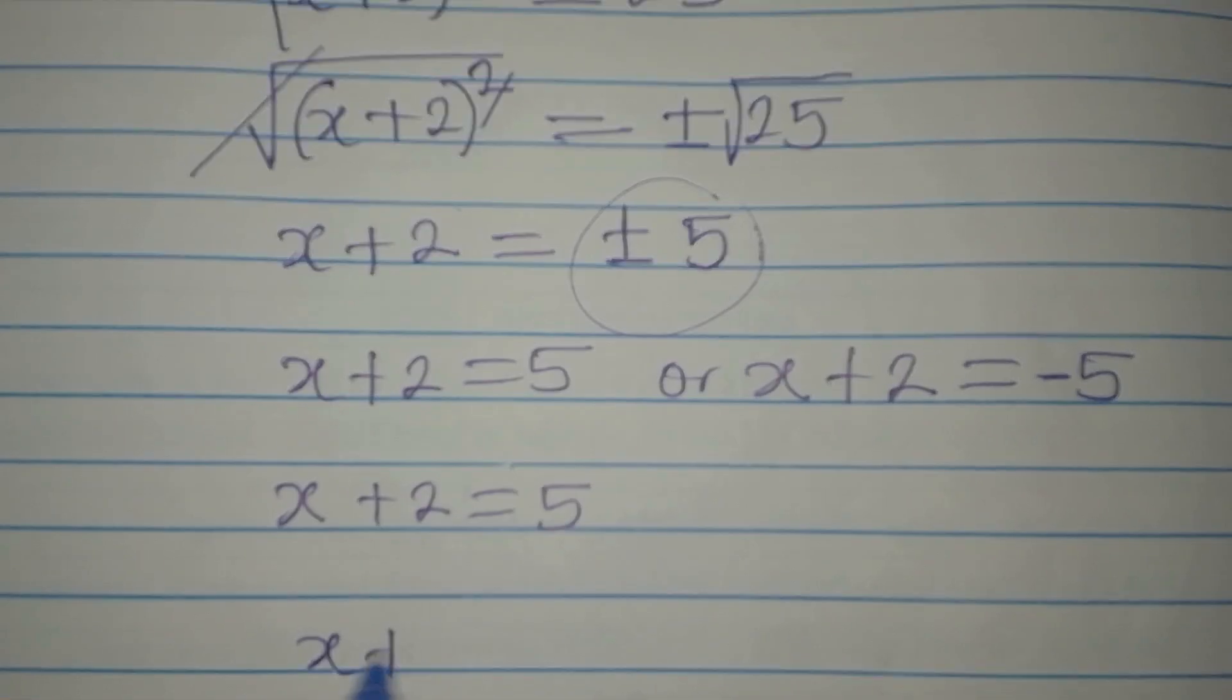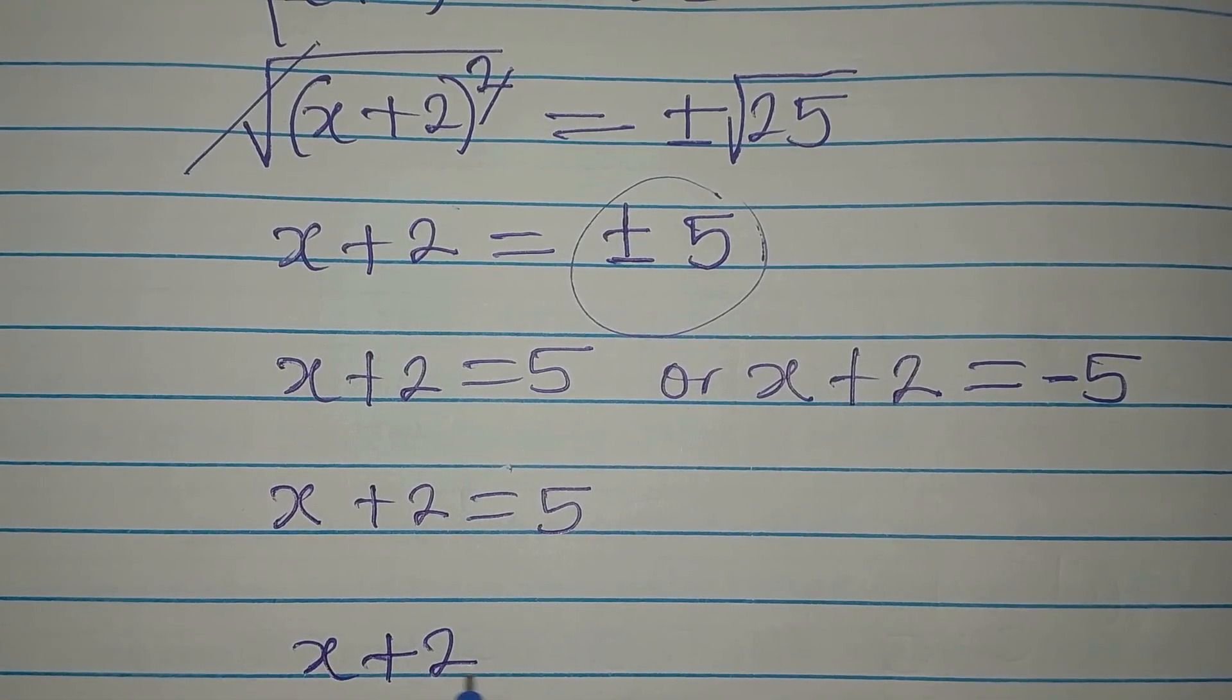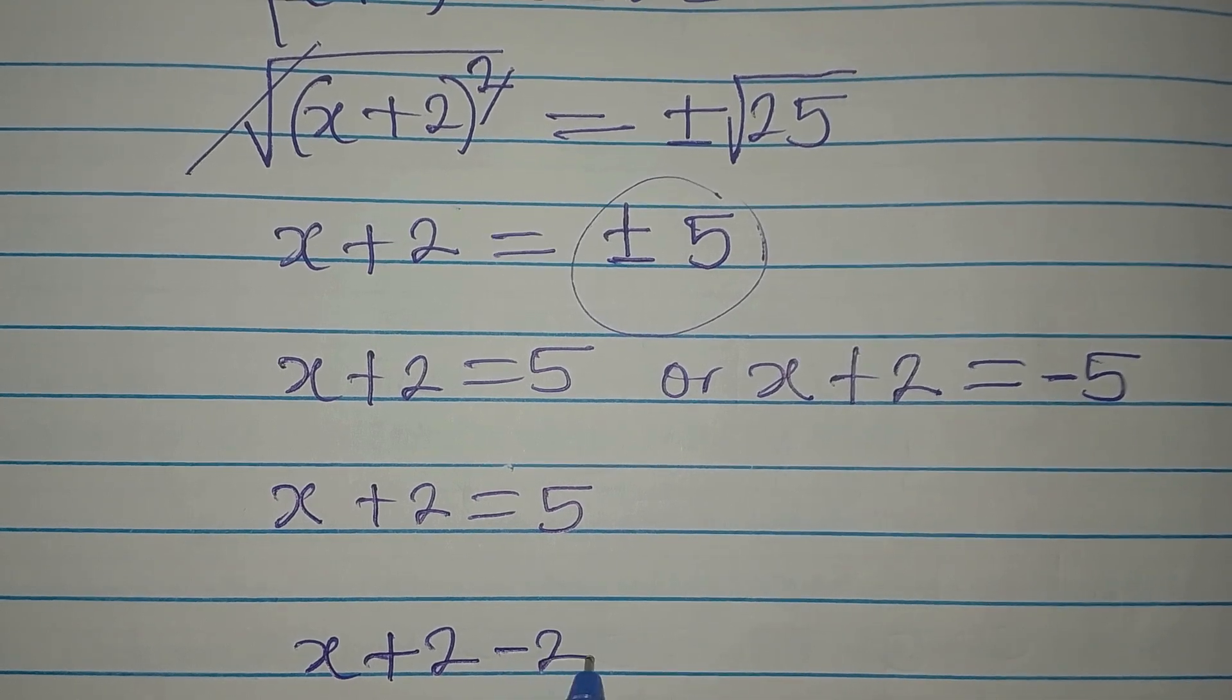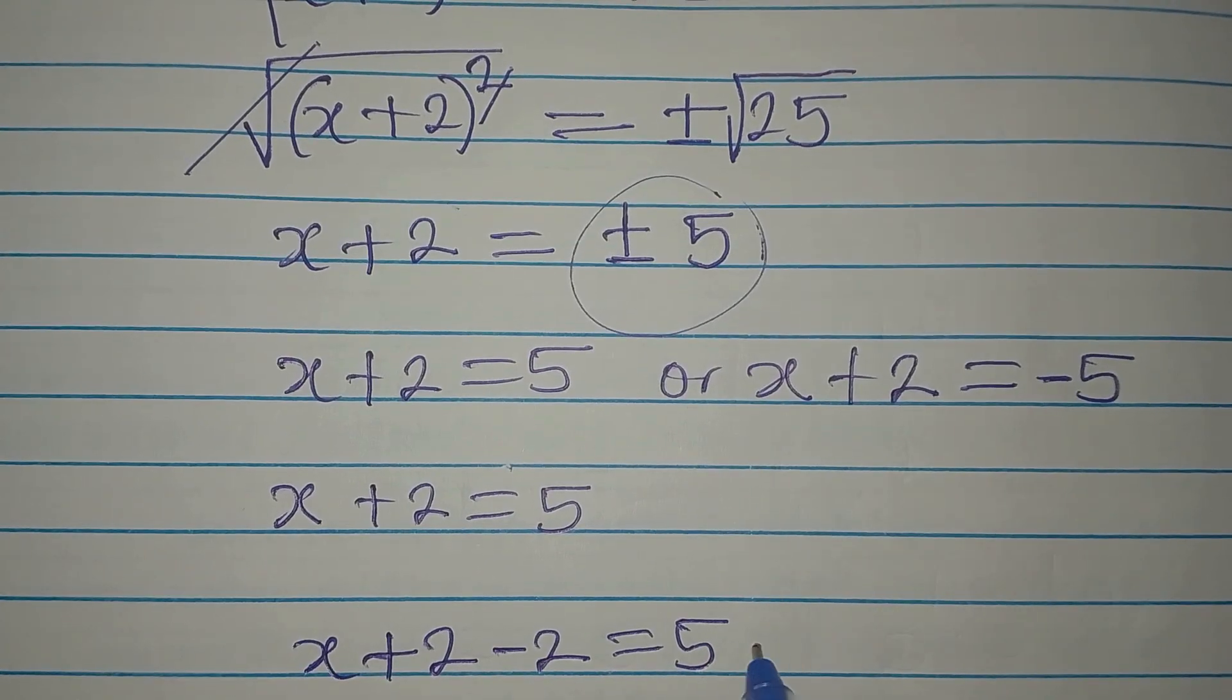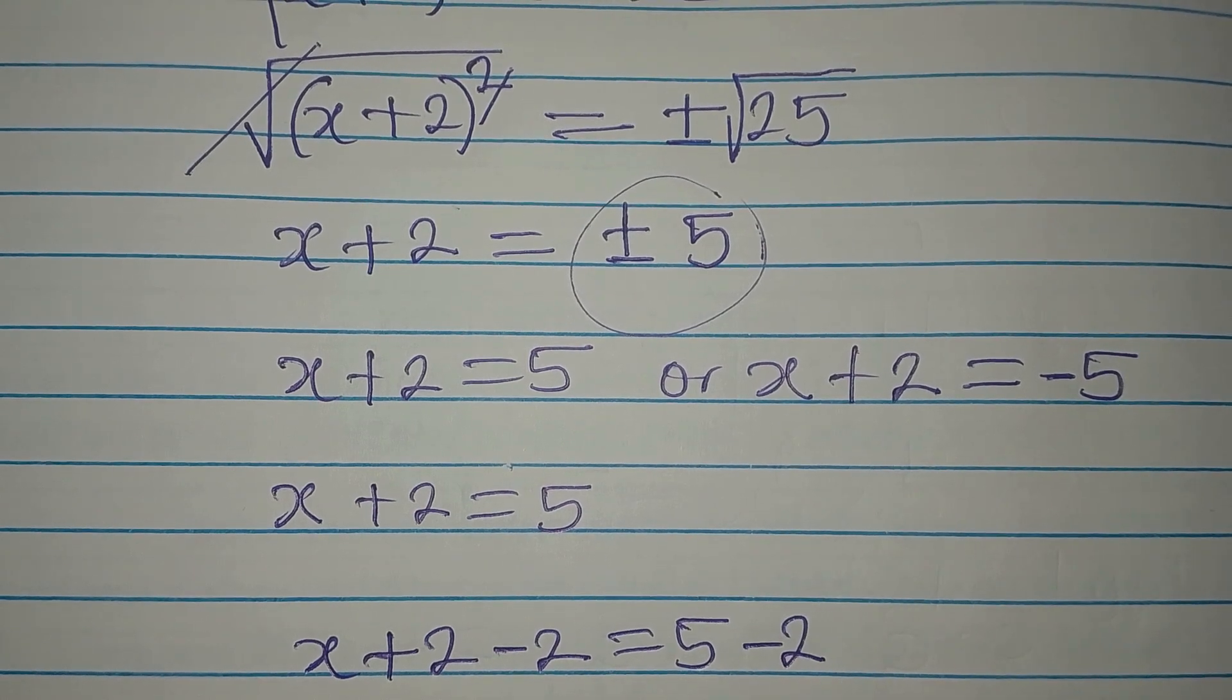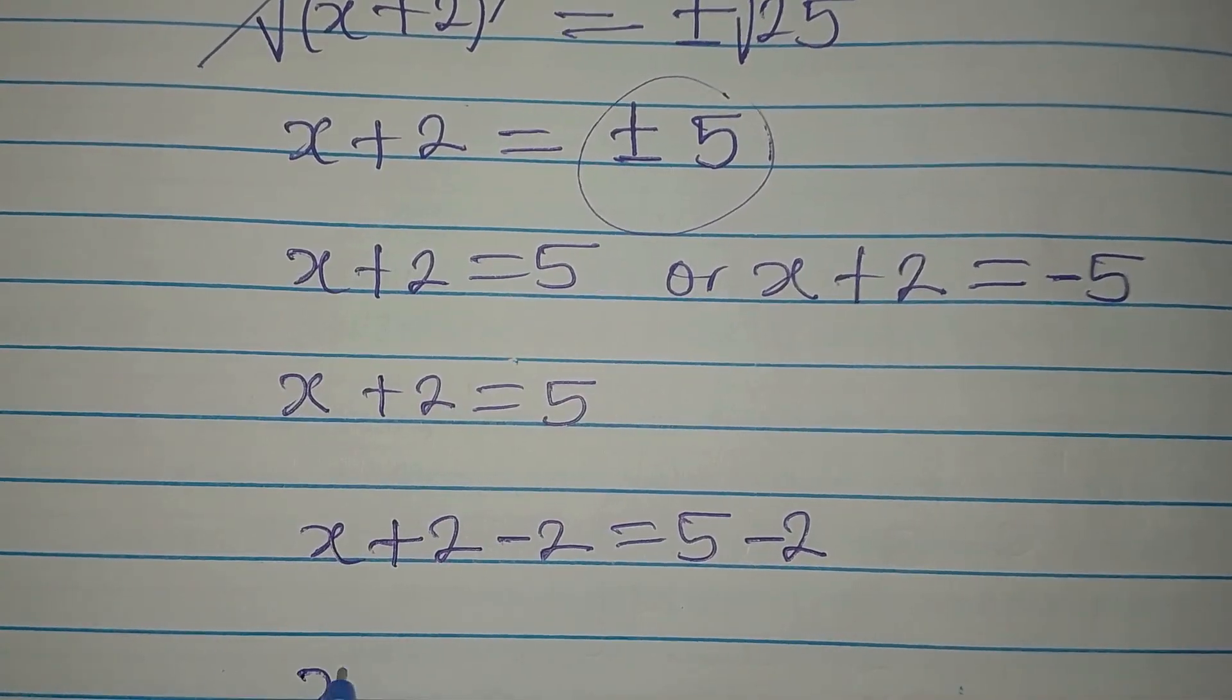As we have x plus 2, to remove this 2 now, we'll subtract 2. Then we have 5. These 2 that we are subtracting should reflect on the other side.